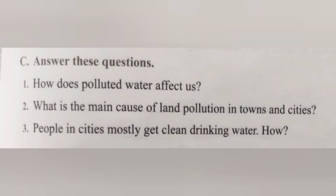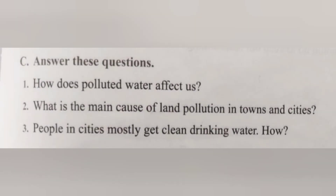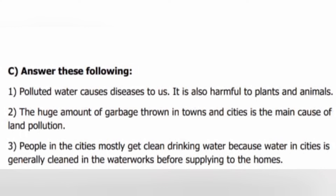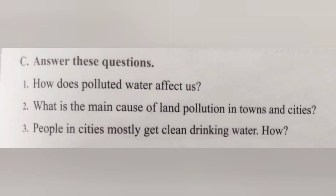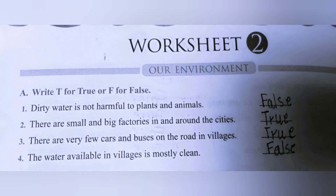Part C: Question and answers. First: How does polluted water affect us? Answer: Polluted water causes diseases to us and is also harmful to plants and animals. Second: What is the main cause of land pollution in towns and cities? Answer: The huge amount of garbage thrown in towns and cities is the main cause of land pollution. Third: How do people in cities mostly get clean drinking water? Answer: Water in cities is generally cleaned in the waterworks before supplying to homes.